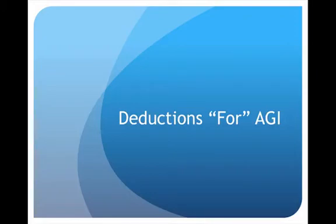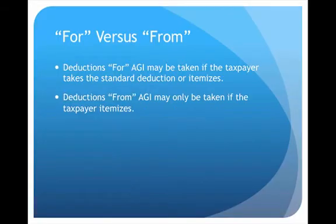This is the video lecture on deductions for AGI. In a previous video we talked about the tax formula, and there were certain deductions classified as 'for AGI' that we're going to focus on here. To distinguish between 'for' versus 'from' AGI deductions: the deductions for AGI are taken before the calculation of AGI, so these deductions actually help determine what adjusted gross income is going to be. These can be taken whether the taxpayer takes the standard deduction or itemizes.